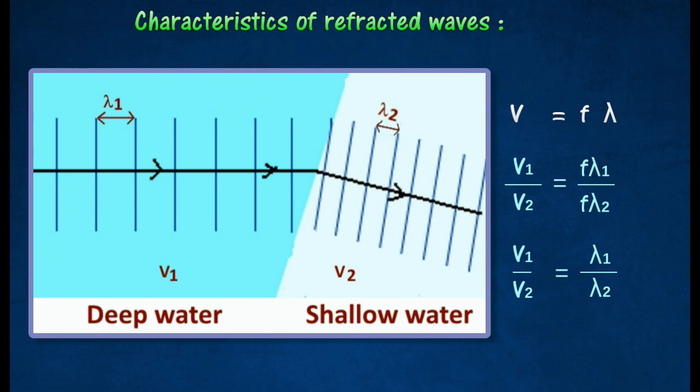The relation between the speed and wavelength can be found from the wave speed equation.